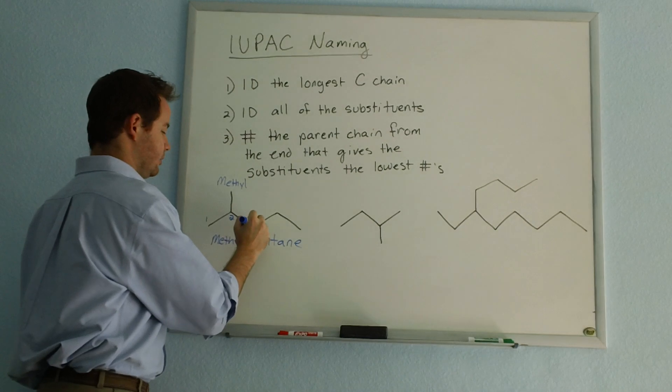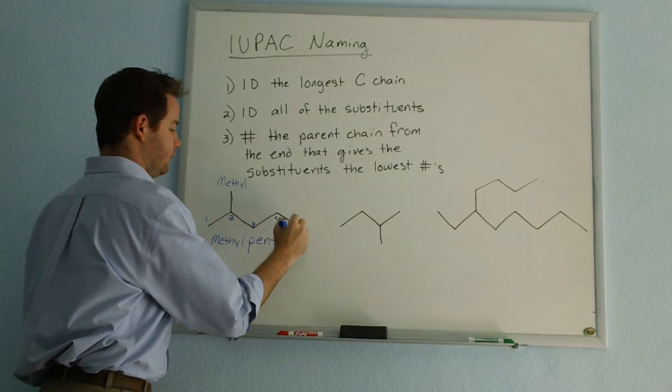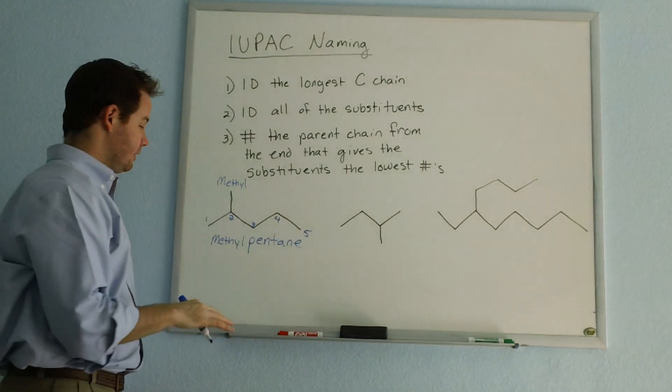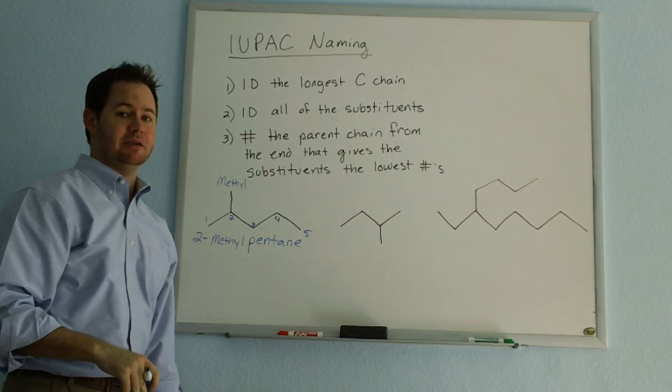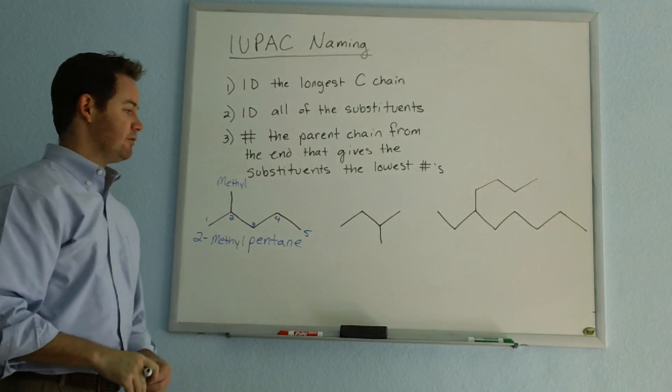So this will be carbon number one, number two, number three, number four, and number five. And the name of this methyl pentane, this will be a 2-methylpentane as a correct name for this compound.